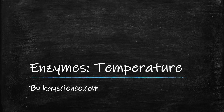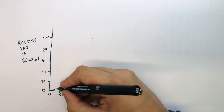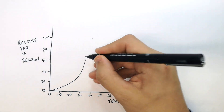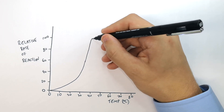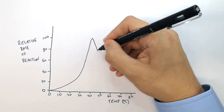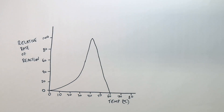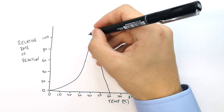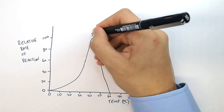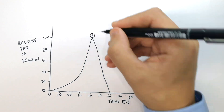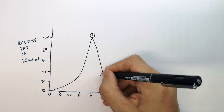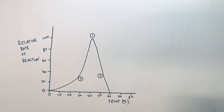The effect of temperature on enzyme activity by kscience.com. This graph shows the effect of temperature on the relative rate of reaction, and we're going to explain this graph in terms of enzyme action. You can split the graph up into three different sections: one, two, and three.